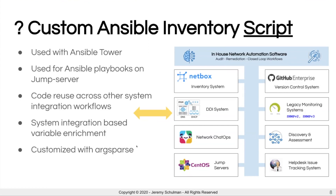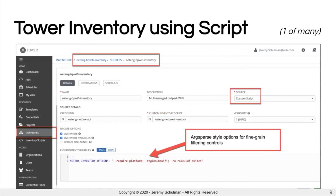One of the things I've done with the inventory script is use ARGPARSE so I can pass filtering parameters using command-line flags. This allows us a couple of interesting results. When defining inventories in Tower, these are just command-line parameters I can put in Ansible Tower. Or if using this on a jump server, I can dev-test with these flags using the Ansible inventory command line, pass parameters, and see the results of what I'm getting out of my inventory script. This makes sure we're pulling data from the right places and enriching the data in the right ways.